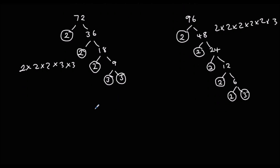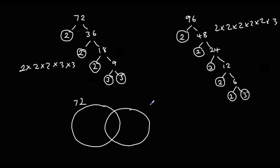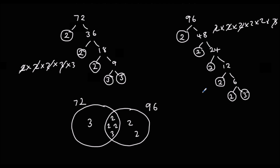Then we draw the Venn diagram for 72 and 96. Looking at the common ones: we've got 2, another 2, another 2, and also a 3 in the middle. What's left on 72 is just a 3. What's left on 96 is two 2s. So the highest common factor is the ones in the middle: 2 times 2 times 2 times 3. That gives us 4 times 2 is 8, and 8 times 3 is 24.